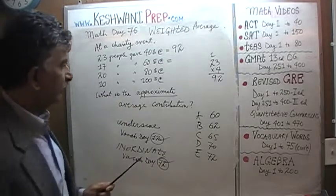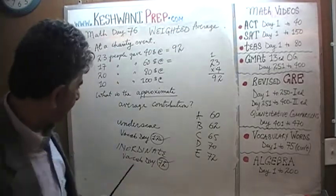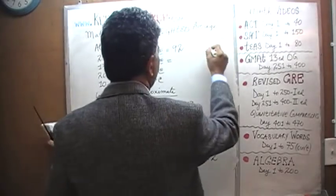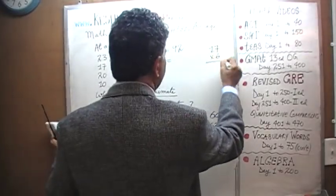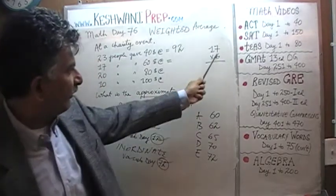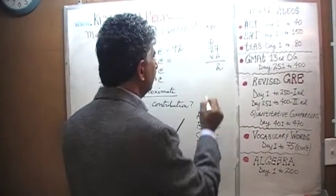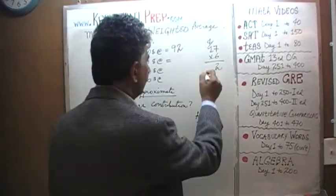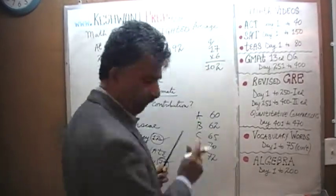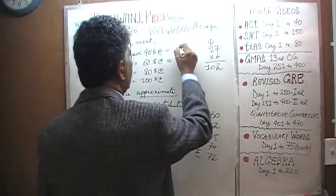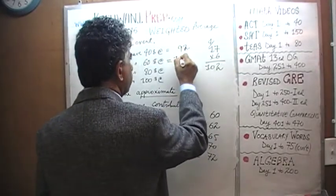Next, we have 17 times 6. Let's do 17 times 6. 7 times 6 is 42, carry 4. 6 times 1 is 6, plus 4 is 10. So it's going to be 102. I did not have forethought to leave room for the hundred digit. 102.